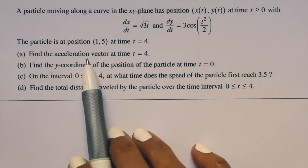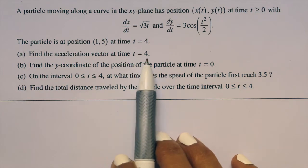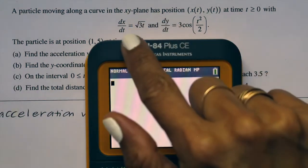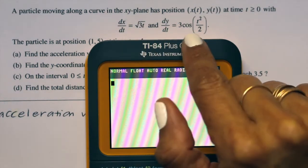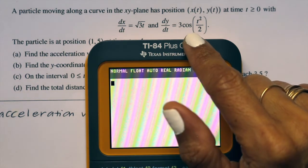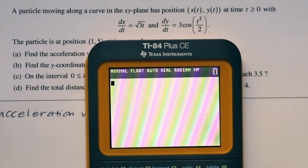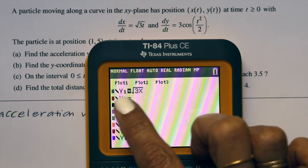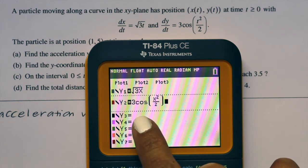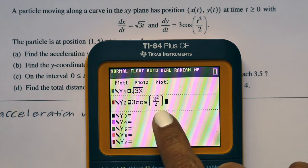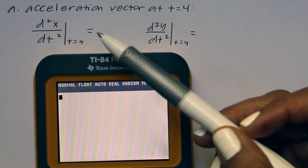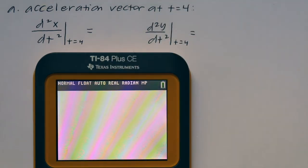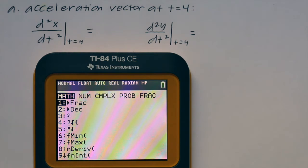Part a says find the acceleration vector at time t equals 4. Before we get started, I'm going to type dx/dt as our y1 and dy/dt as our y2. So I'm going to press y equals. I have the square root of 3x as our y1 and y2 is 3 cosine of x squared over 2. For an acceleration vector, we need the second derivative, so we're going to use math 8.